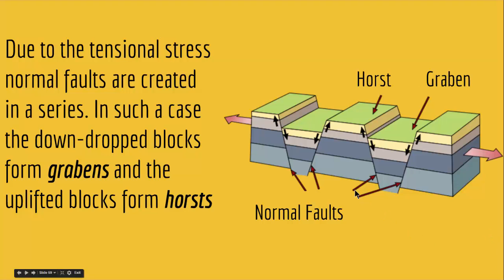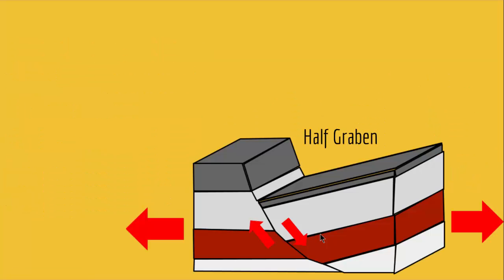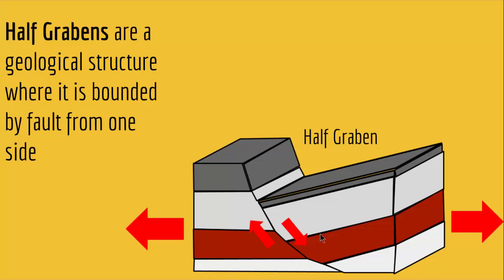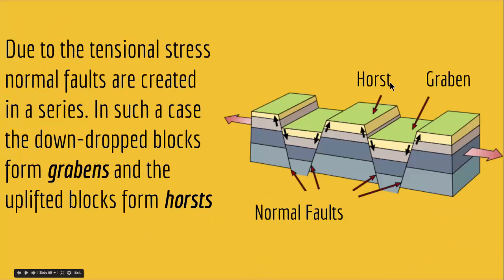In Horsts and Graben, we have normal faults on two sides. But what if you have a fault only on one side? That is called a half Graben — a geological structure bounded by a fault from one side only. Since only one side has a normal fault, that foot wall goes up and the hanging wall goes down, forming a half Graben. In Horsts and Graben, multiple normal faults create depressed areas called Graben and uplifted areas called Horsts.